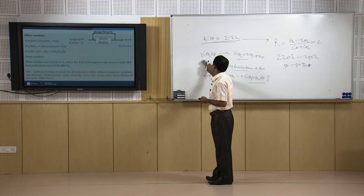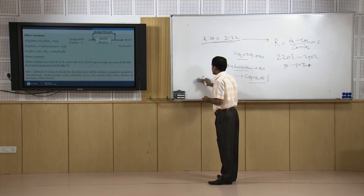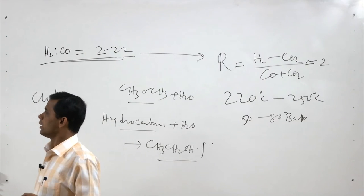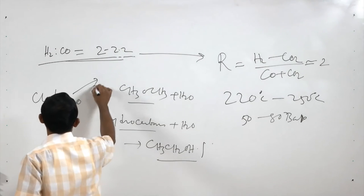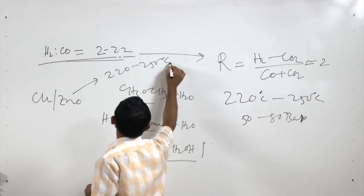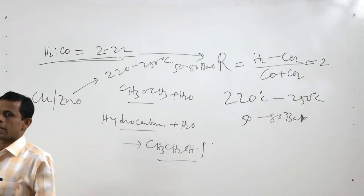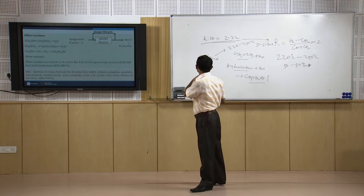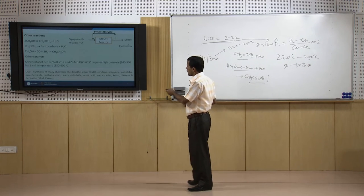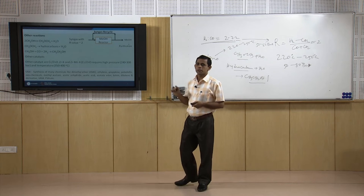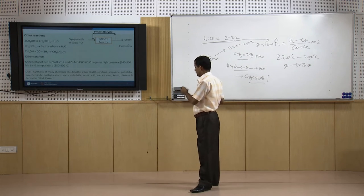In this type of reactor, a copper-based catalyst — specifically Cu-ZnO catalyst — is used, operating at 220–250°C and 50–80 bar pressure. Some other catalysts are also available for syngas-to-methanol conversion but require different temperature and pressure conditions. For example, Cr-ZnO requires high pressure of 240–300 bar and temperature of 350–400°C, making it less favorable. Other catalysts mentioned include ZrK and ZrMnK.